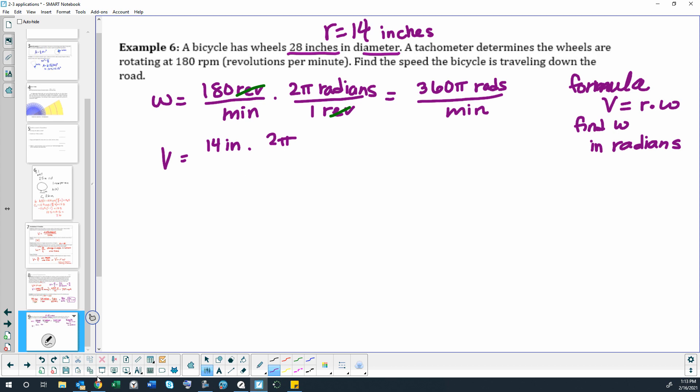Oh nope, that's the wrong one. Multiply by 360π radians in one minute. And that gives us 14 times 360π inches per minute.